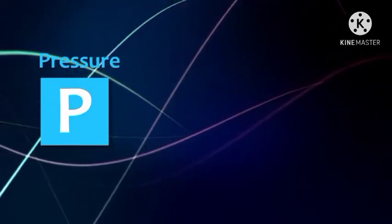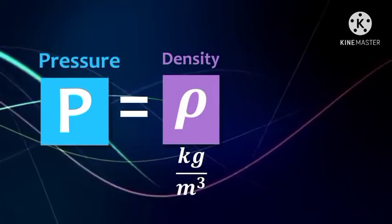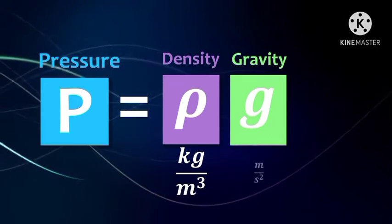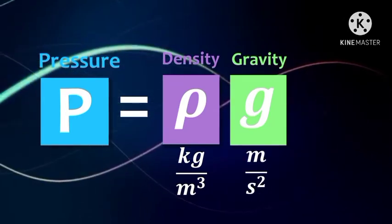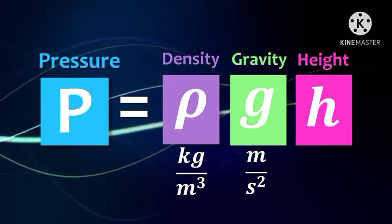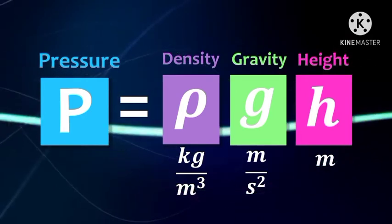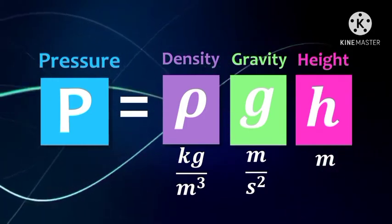we can use this formula. The pressure of a liquid is equal to the density of the liquid, expressed in kilogram per meter cubed, times gravity, which is equal to 9.8 meters per second squared, times the height or depth — which is the distance from the surface of the liquid to the point being studied — expressed in meters.